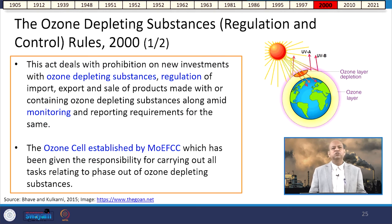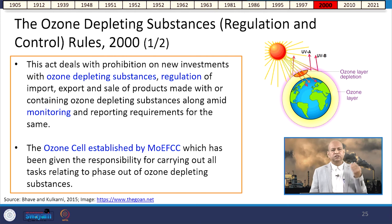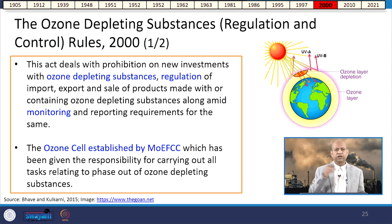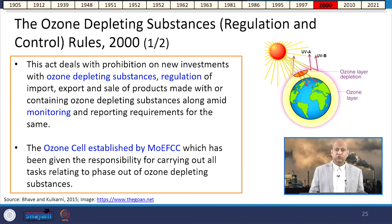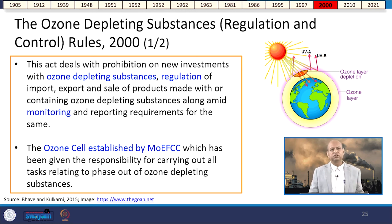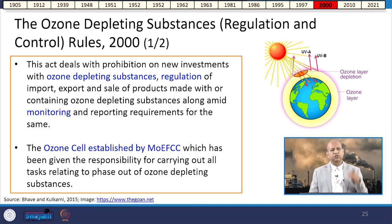The Ozone Depleting Substances Regulation and Control Rules 2000 addressed the prohibition of new investments involving ozone-depleting substances and regulation of import, export, and sale of such products. Following the Montreal Protocol signed in 1987, with time given to developing countries, this 2000 act allowed for a proper phase-out process.